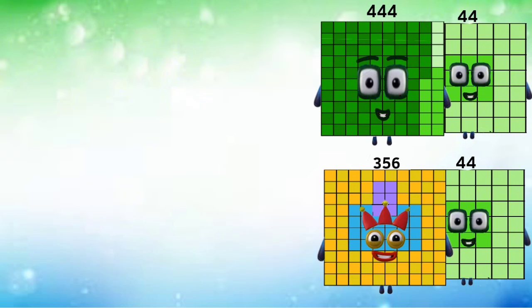400 plus and minus 46 equals 446 and 354. Then 446 plus 46 and 354 minus 46 equals 492 and 308.